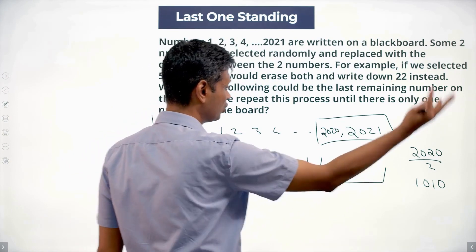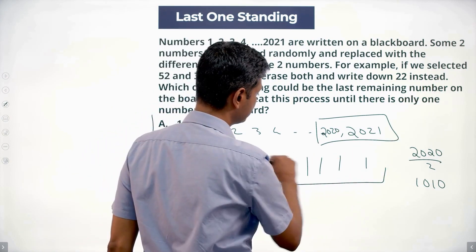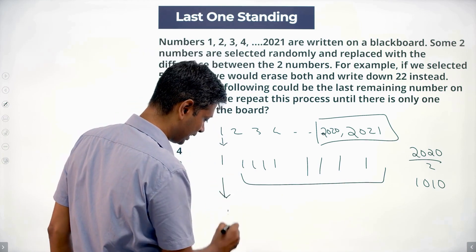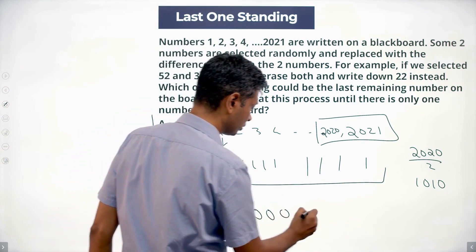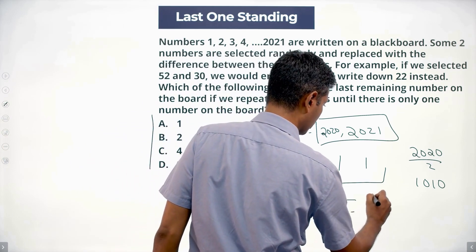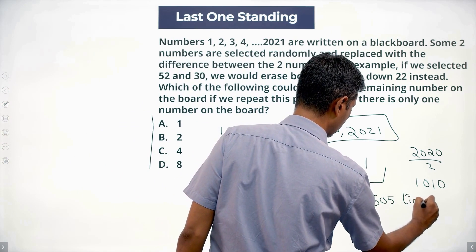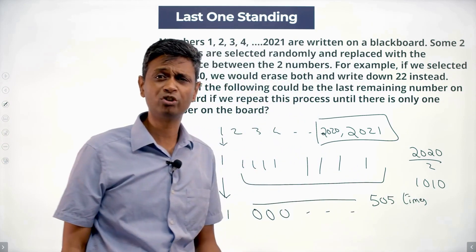What do I do? I take all these ones, pair them up, I'll get zeros. I have this 1, I'll retain. I'll have zeros, 505 times. 1010 by 2, 505 zeros I have.